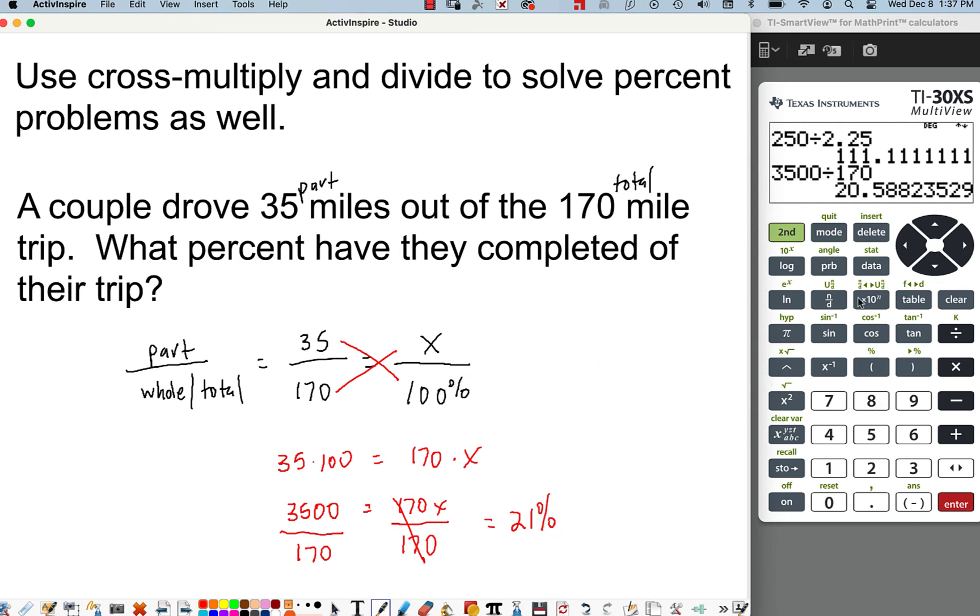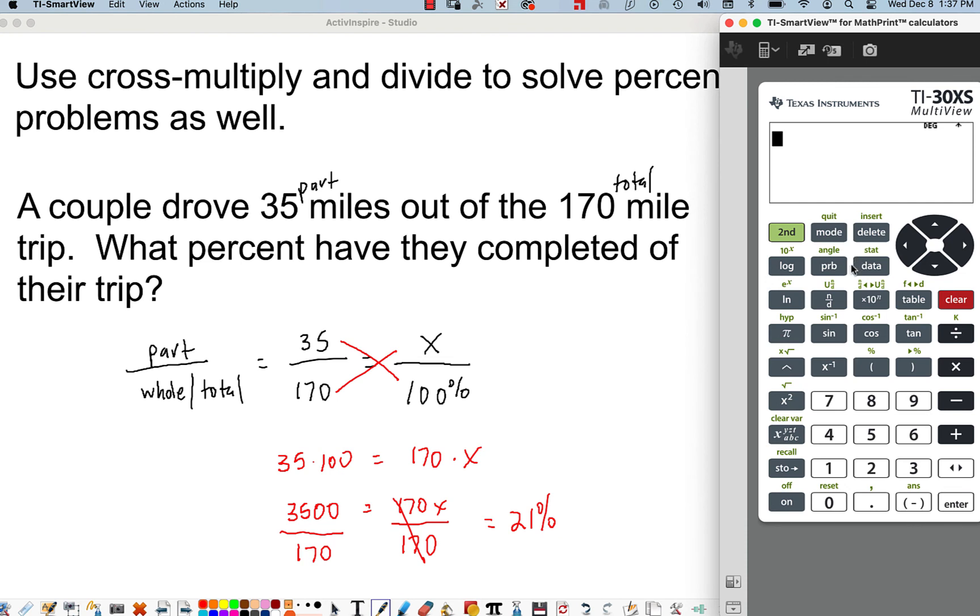The other way you could do it is you can, over here on the calculator, if you can use the calculator, hit the N over D button, and you could do 35 and then arrow down over 170. Arrow over and then hit enter. And it will give you, in this case, it reduces it to a fraction. But let's say again we want that percentage. We can do second, convert to percent right here. You see where my cursor is circling? That's the convert to percent. So now we're converting 7 over 34. Sure enough, we get the same answer.